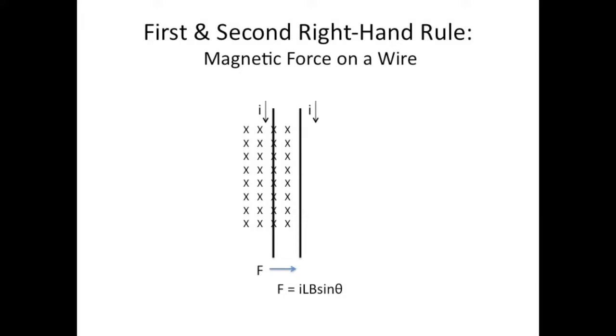And so obviously this means if their currents were anti-parallel, meaning they're in opposite directions, they would repel.